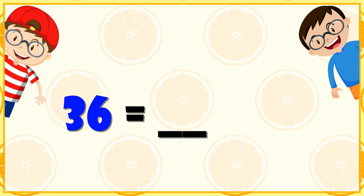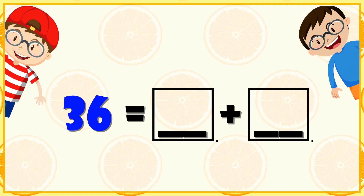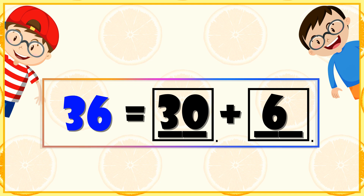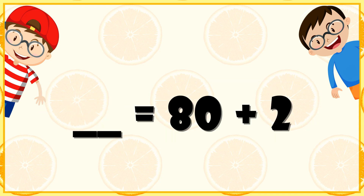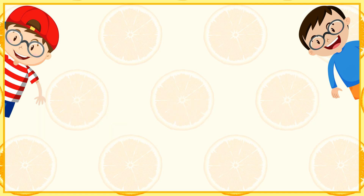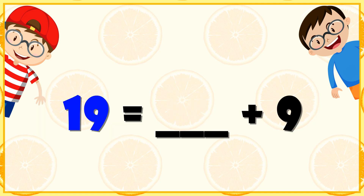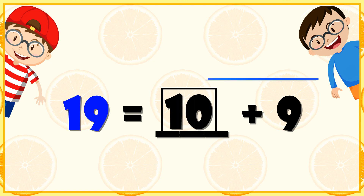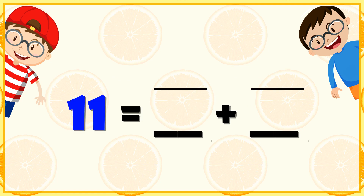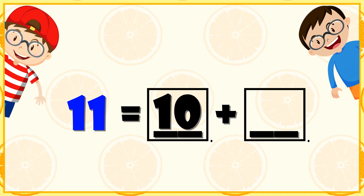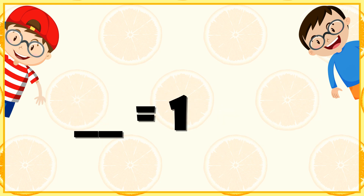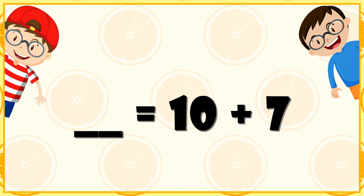36 is equal to dash plus dash — 30 plus 6 will make 36. Dash is equal to 80 plus 2, so 80 plus 2 will make 82. Next: 10 plus 9 will make 19. 11 is equal to dash plus dash — 10 plus 1 will make 11. Dash is equal to 10 plus 7, so 10 plus 7 will make 17.